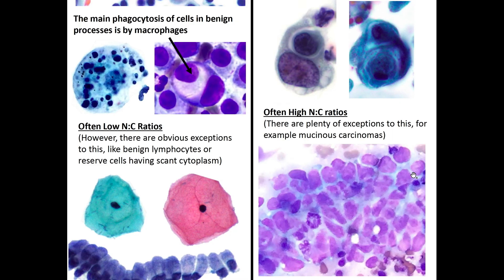Regarding the nuclear-to-cytoplasmic ratio: in benign entities you have a low N:C ratio — lots of cytoplasm with smaller nuclei. In malignant processes you have a very high N:C ratio — more nucleus than cytoplasm. For those who have seen pap smears, H-SIL is a good example of a high N:C ratio, whereas ASC-US or L-SIL have a smaller nucleus and more cytoplasm.